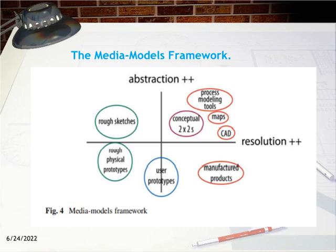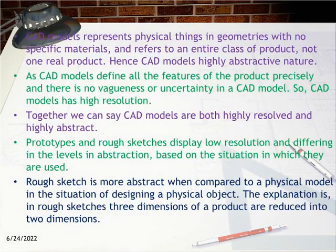Manufactured products represent high resolution but low abstraction. Rough physical prototypes represent low resolution and low abstraction. User prototypes represent low abstraction and moderate resolution. CAD models represent physical things in geometries with no specific materials and refer to an entire class of product, not one real product — hence CAD models are highly abstractive. As CAD models define all features of the product precisely with no vagueness or uncertainty, CAD models have high resolution. Together, CAD models are both highly resolved and highly abstract.